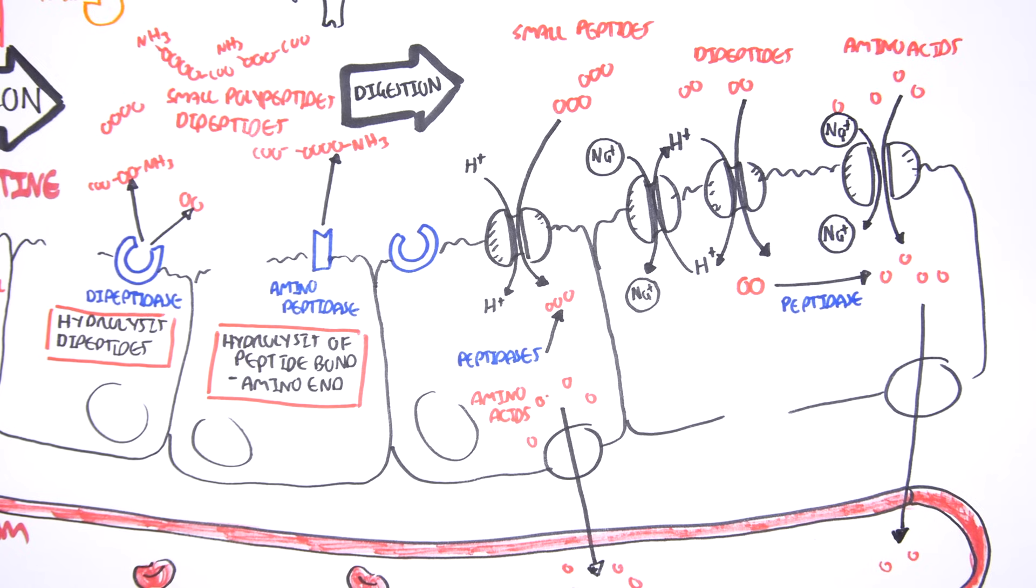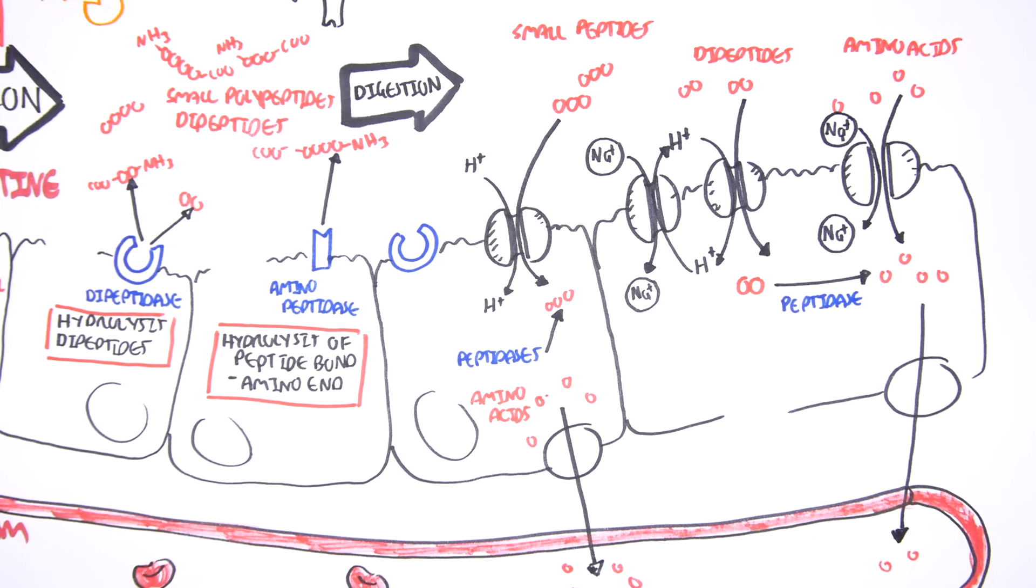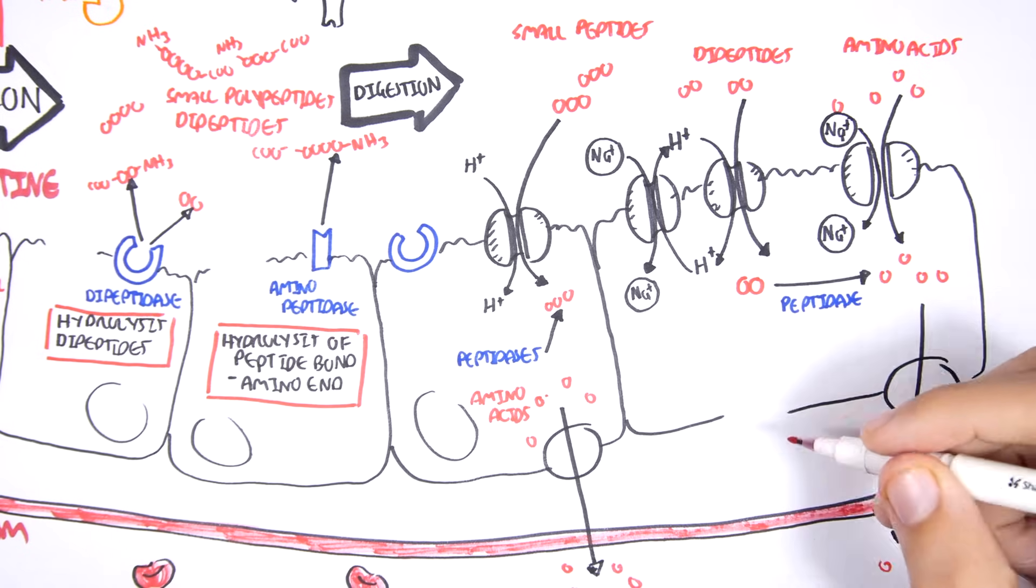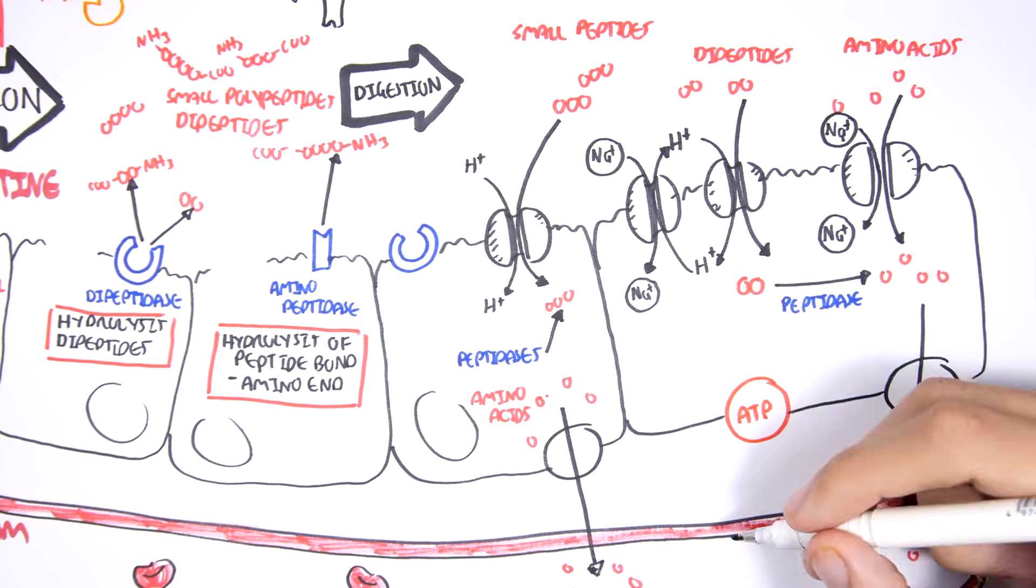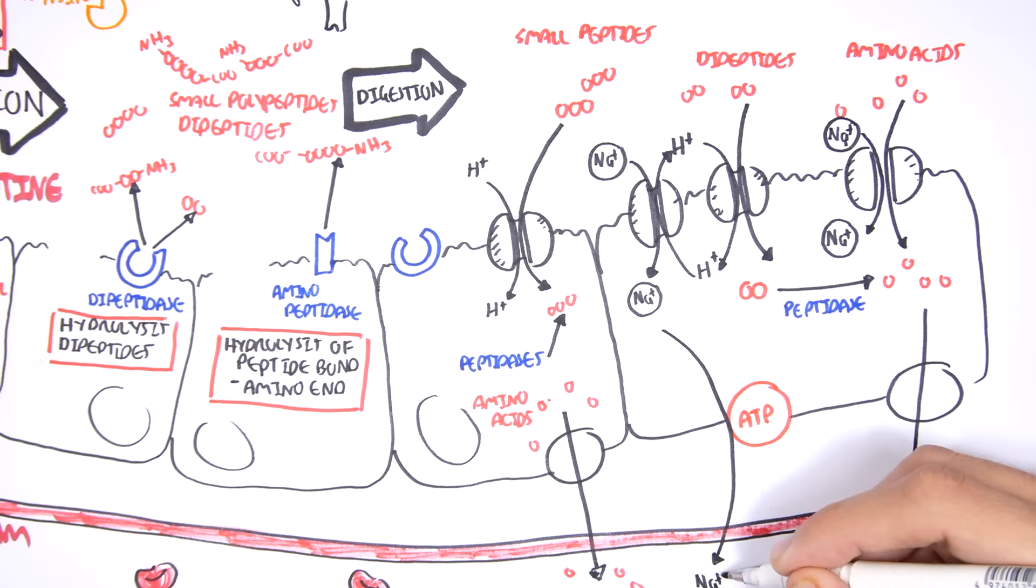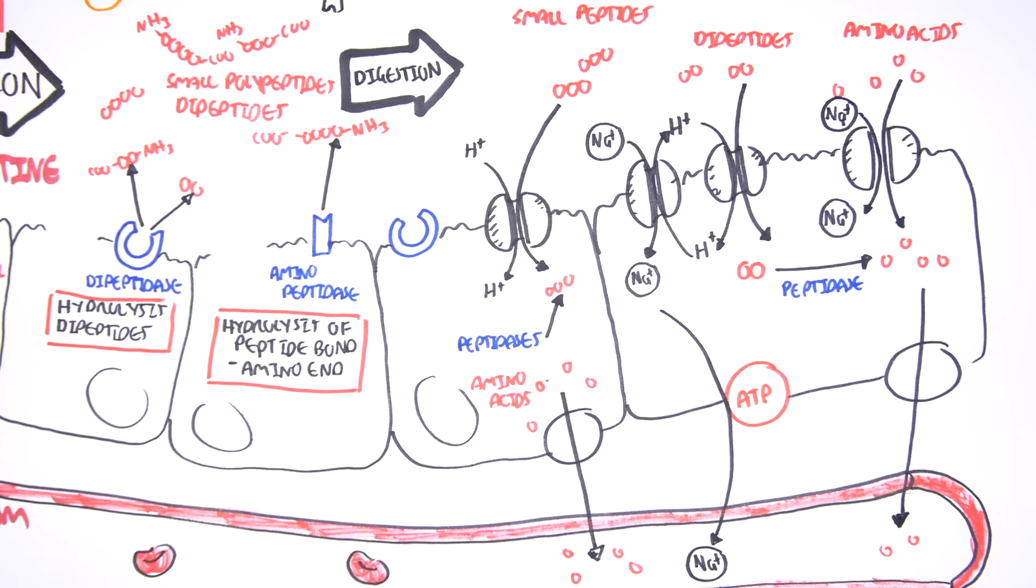You can see from this diagram that when amino acids, and also di and tripeptides, are absorbed into the cell, there will also be a net absorption of sodium. And because of this, water is also absorbed. Sodium is reabsorbed into the extracellular matrix in exchange with potassium via the sodium-potassium pump.